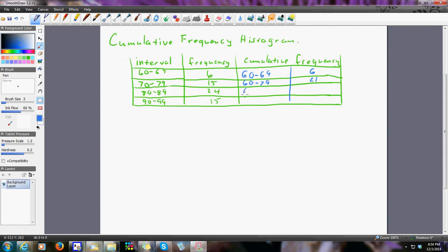Between 80 and 89, I had 24, but that means between 60 and 89, I had 21 plus 24, which is 45.